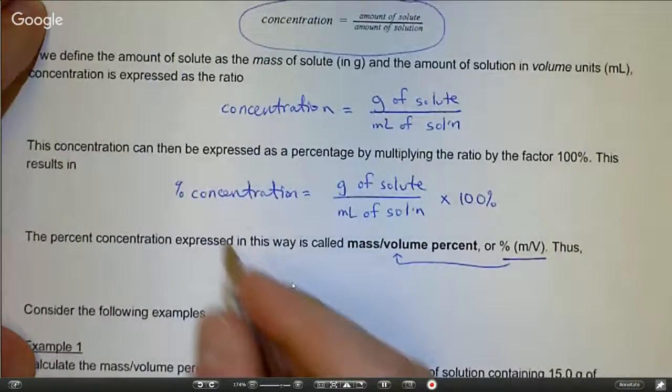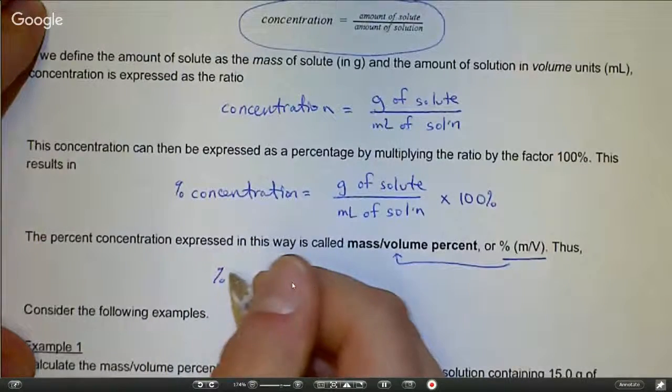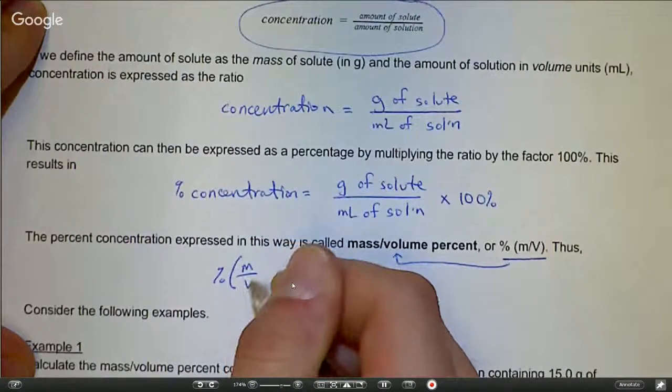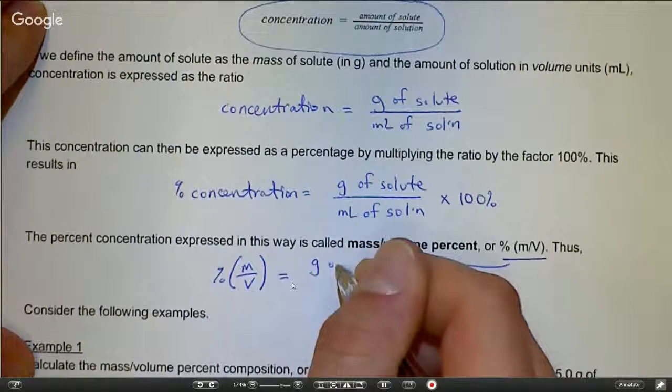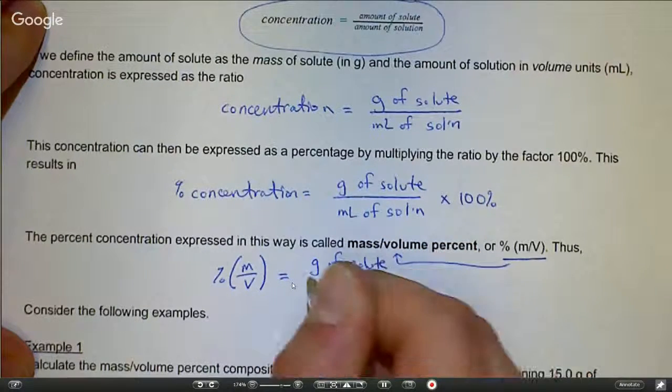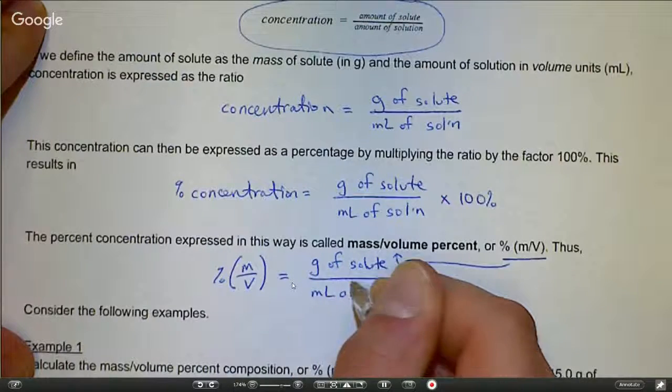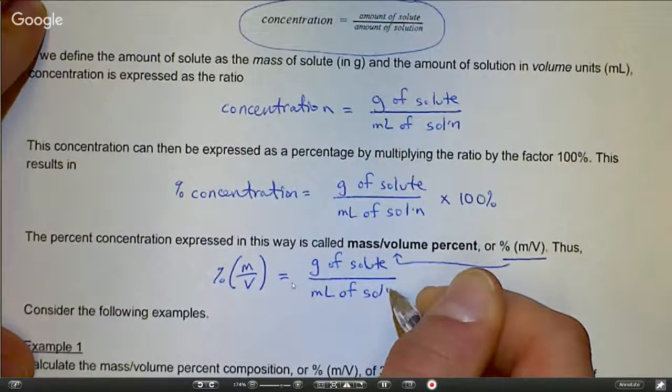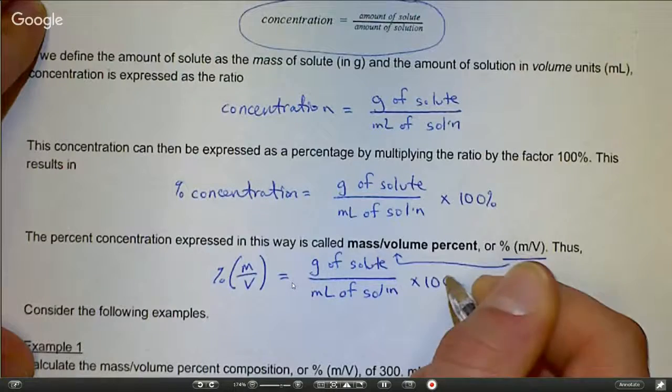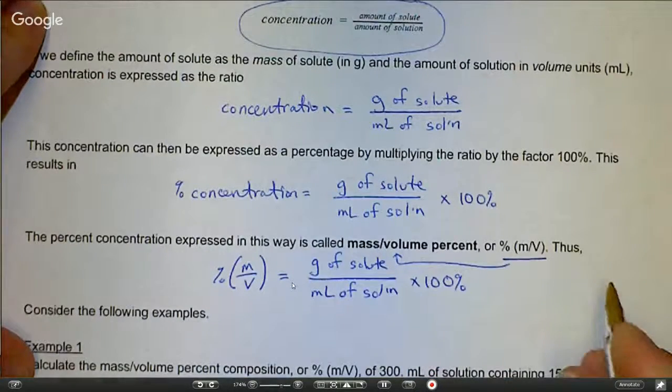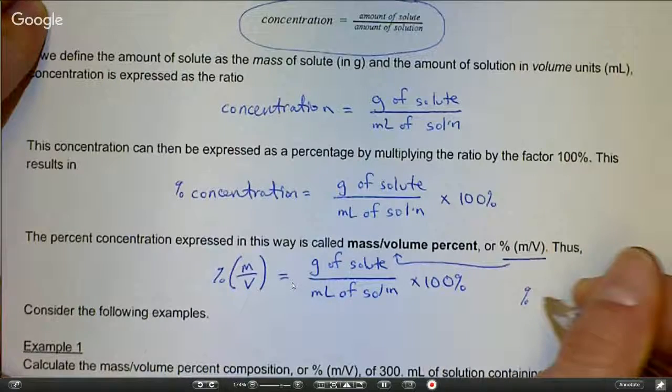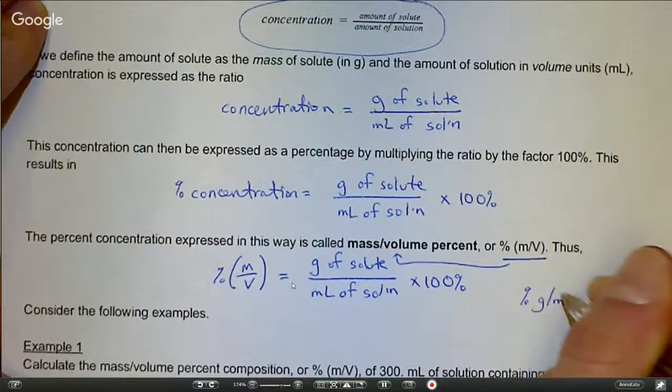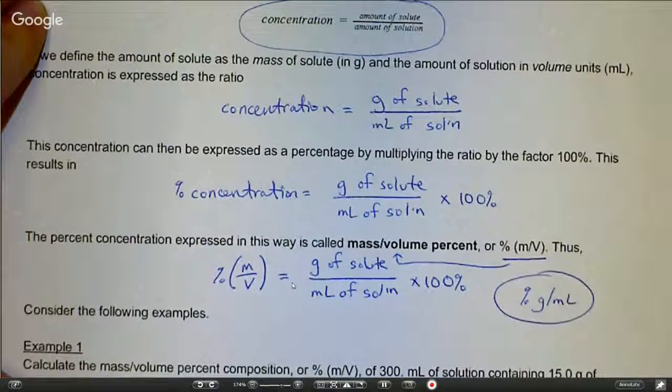To summarize, percent mass volume equals grams of solute over milliliters of solution times 100%. Realize that your unit here is going to show up as percent grams per milliliter.